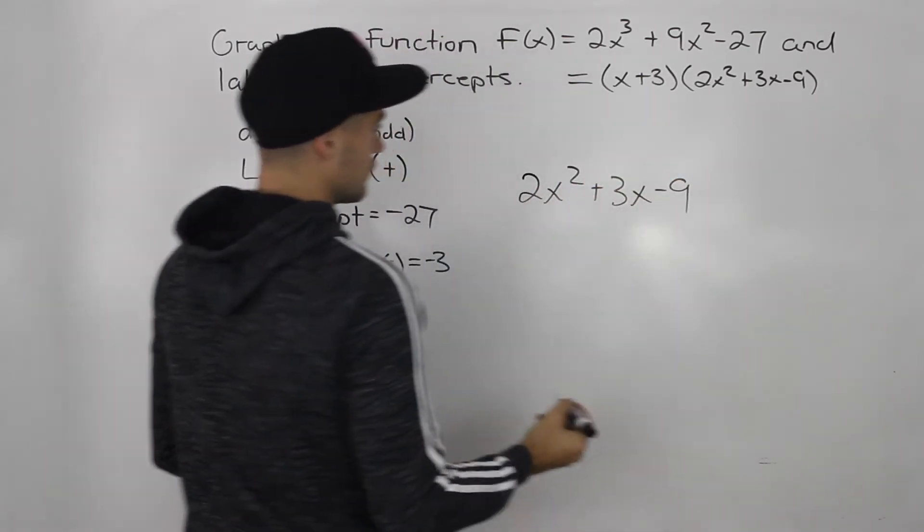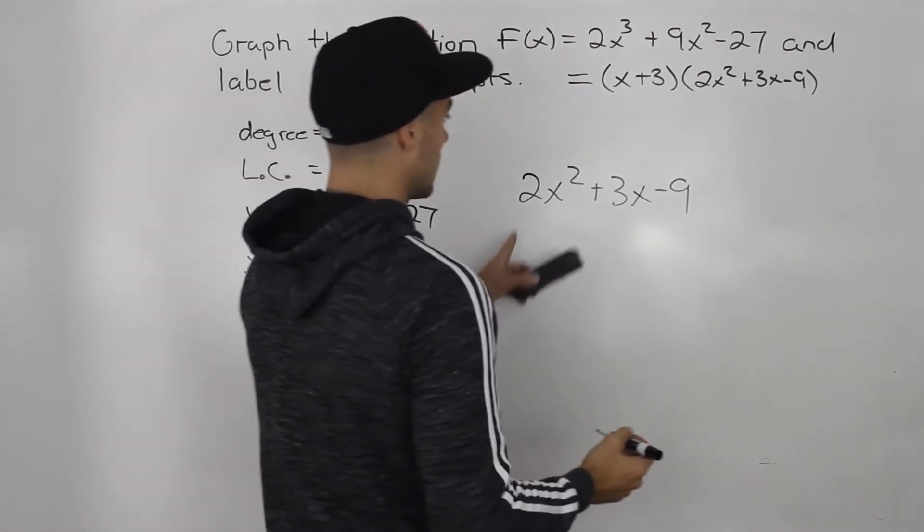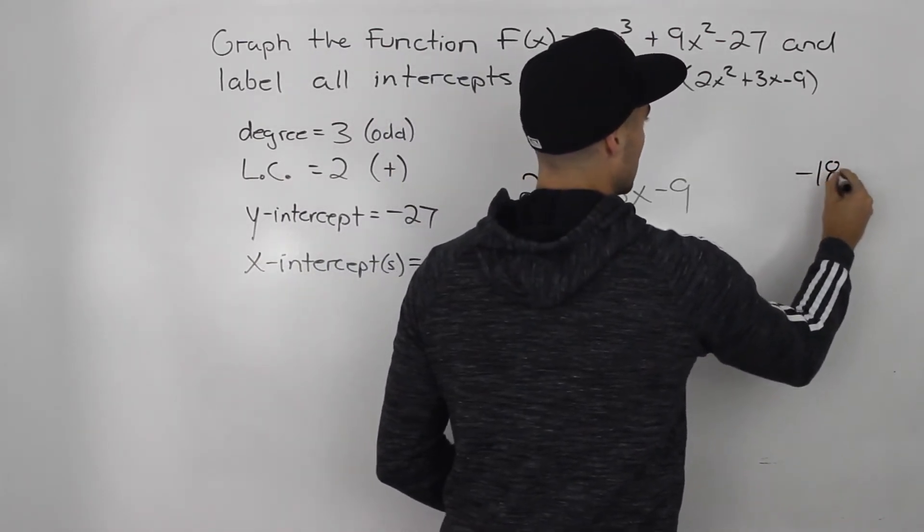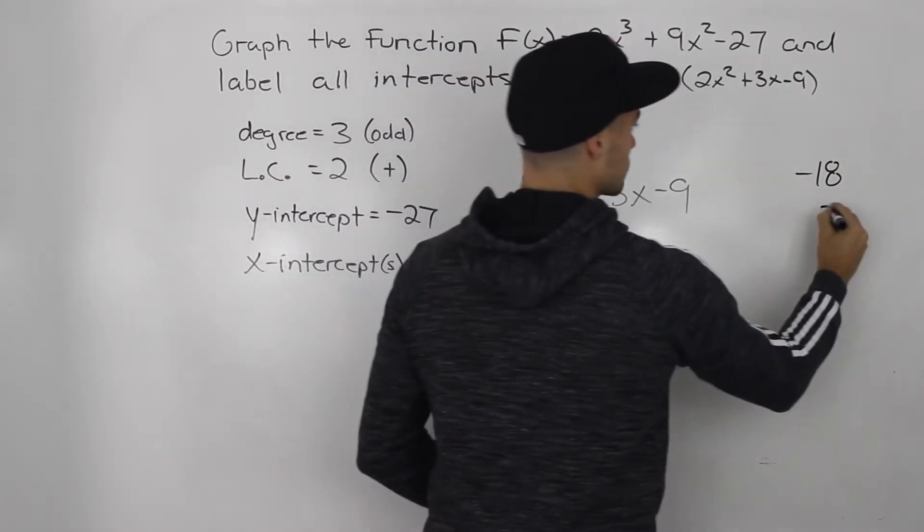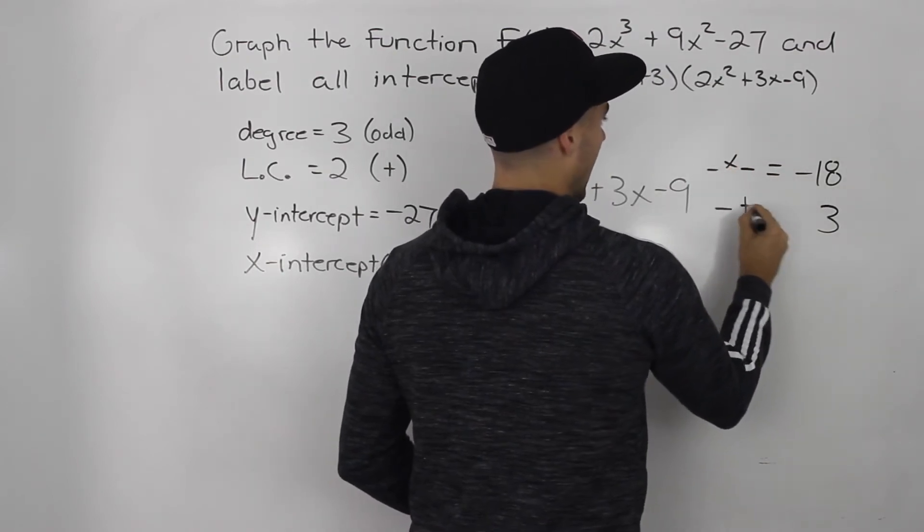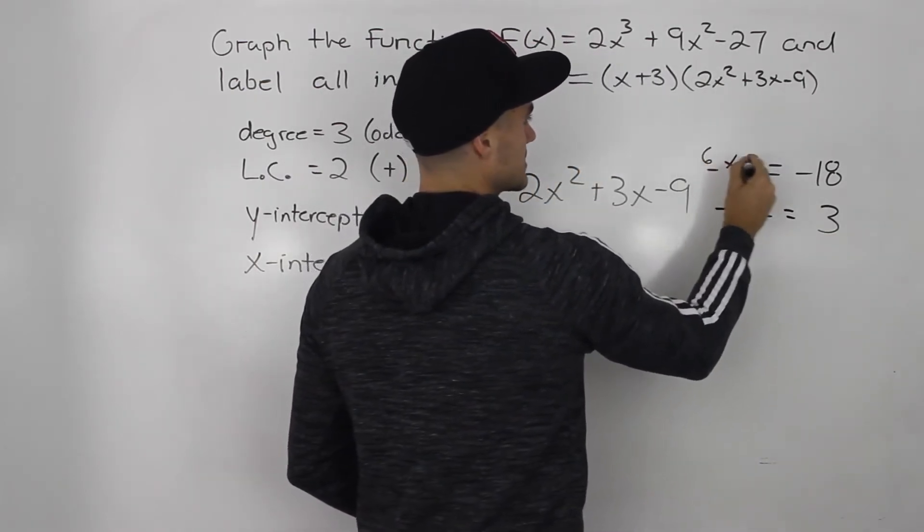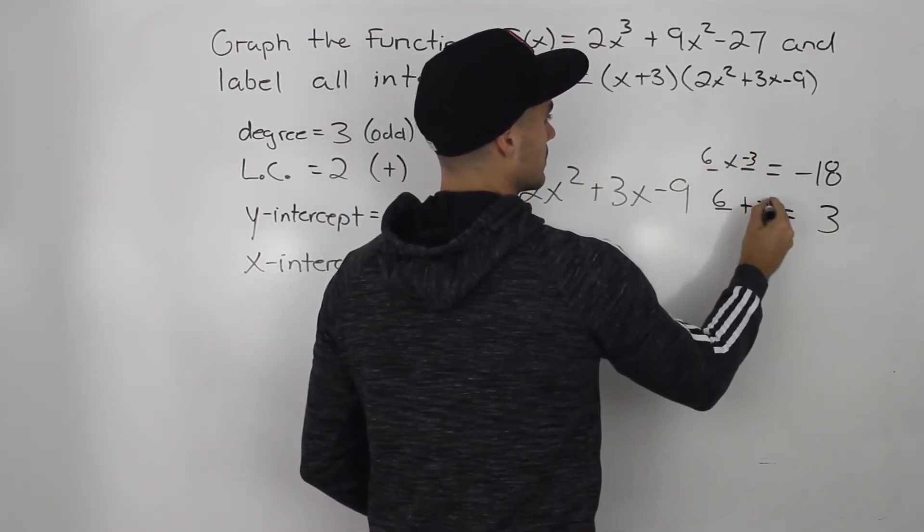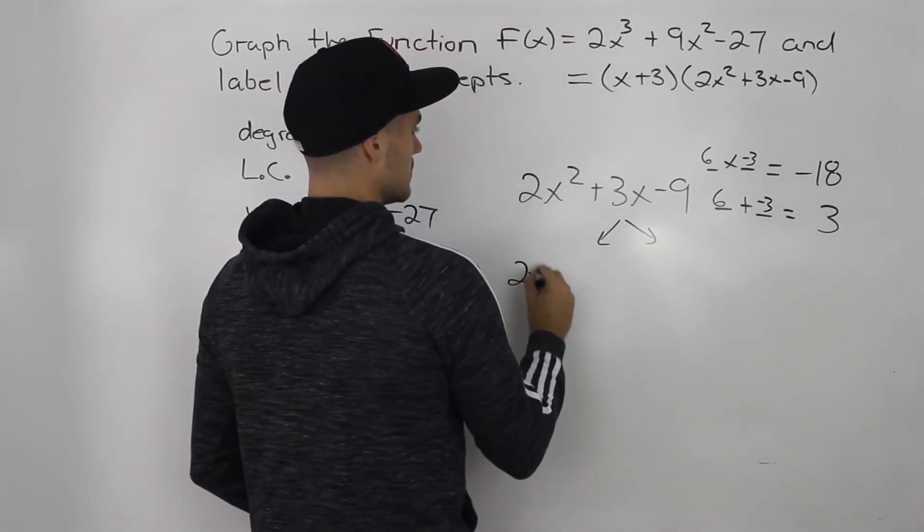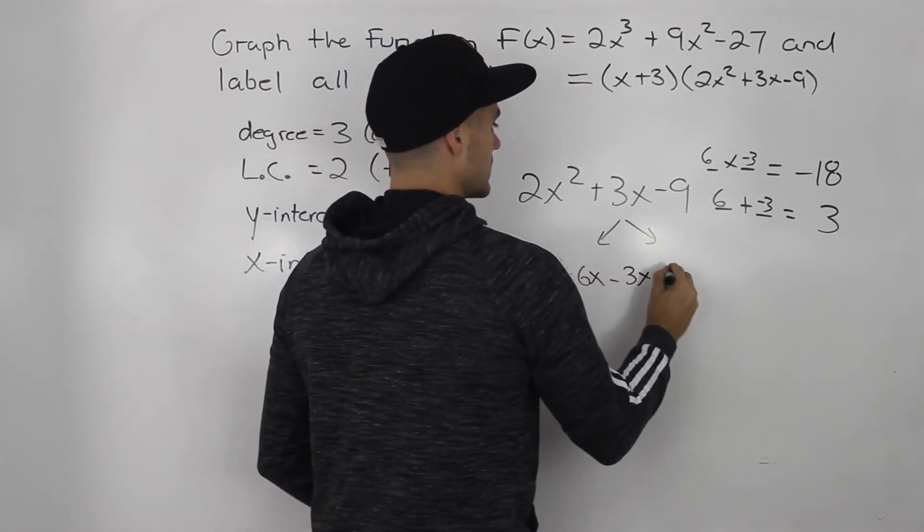And I believe this will factor smoothly. So what we can do is we can do decomposition. a times c is negative 18 and then the b value is 3. So what two numbers multiply to negative 18 and add up to 3. Well, 6 and negative 3, right? Those two work. So we can decompose that 3x into 6x minus 3x minus 9.